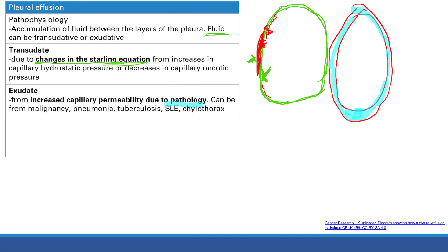So, pathology examples include malignancy, lung cancer basically, pneumonia, tuberculosis, SLE,